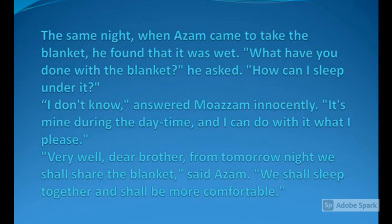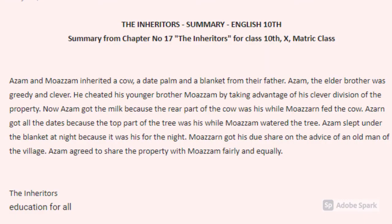That same night, when Assam came to take the blanket, he found it was wet. Moazam claimed that since it belonged to him during the daytime, he could do whatever he liked with it. Assam then said, 'Very well, dear brother, from tomorrow night we shall share the blanket and sleep together.' This is the short summary of chapter number 17, 'The Inheritors.'